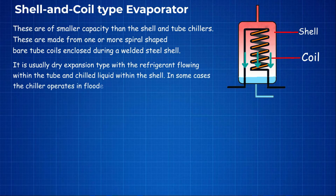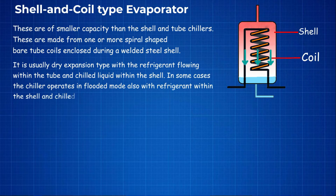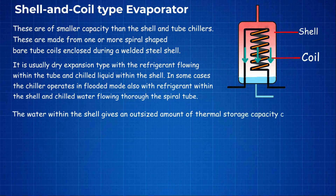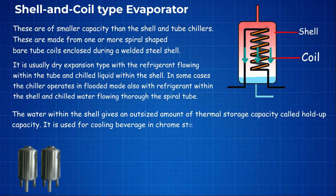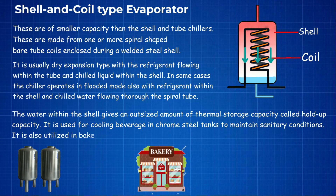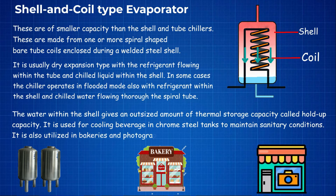In some cases the chiller operates in flooded mode also, with refrigerant within the shell and chilled water flowing through the spiral tube. The water within the shell gives an outsized amount of thermal storage capacity called holdup capacity. It is used for cooling beverages in stainless steel tanks to maintain sanitary conditions, and is also utilized in bakeries and photographic laboratories.